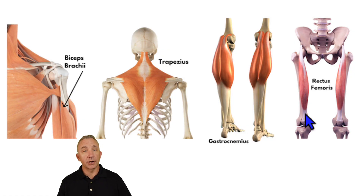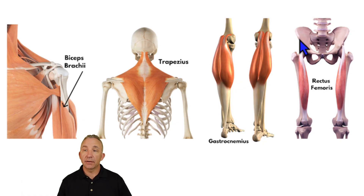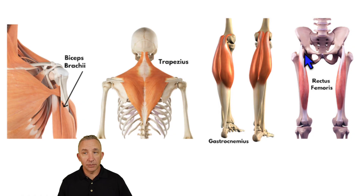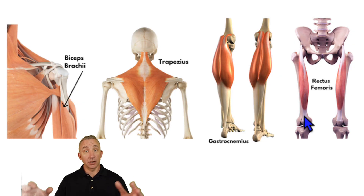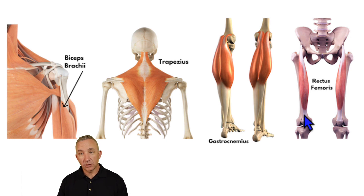The rectus femoris is one of our quadriceps. Its origin is at the anterior inferior iliac spine — one of the spines of the ilium — and also at part of the acetabulum where the femur connects. It comes down and inserts at the tibial tuberosity by way of the quadriceps tendon, because all of the quads come together at that one point on the distal side. As a result, the rectus femoris can extend the knee and also flex the hip.